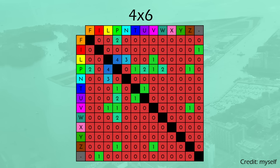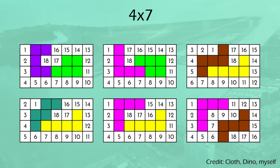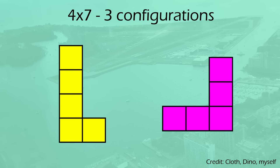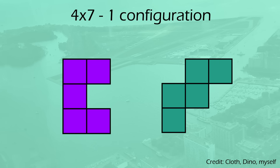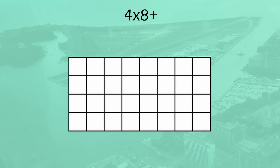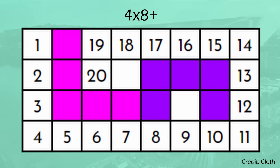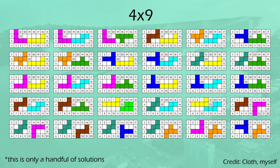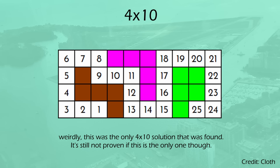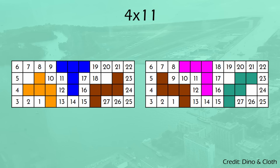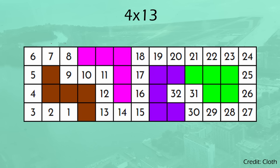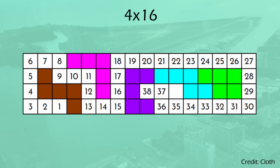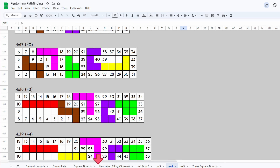Moving on to the 4x7, 6 total configurations were found, resulting in a path of 18. Every single path is different, and only half of the pentominos are in any of these 6 configurations. L and V are in the most configurations at 3, P and Z both have 2, and U and W both only have 1. 4x8 and above is where we stop finding every single solution, as there ends up becoming too much to manually find. The 4x8 has a maximum solution of 20, the 4x9 has a maximum solution of 22, and then the 4x10 starts us off with 3 pentominos creating a maximum path of 25 cells. If you want to see what everyone has come up with, a communal spreadsheet has been created showing off the maximum paths found for many board sizes — link in the description.